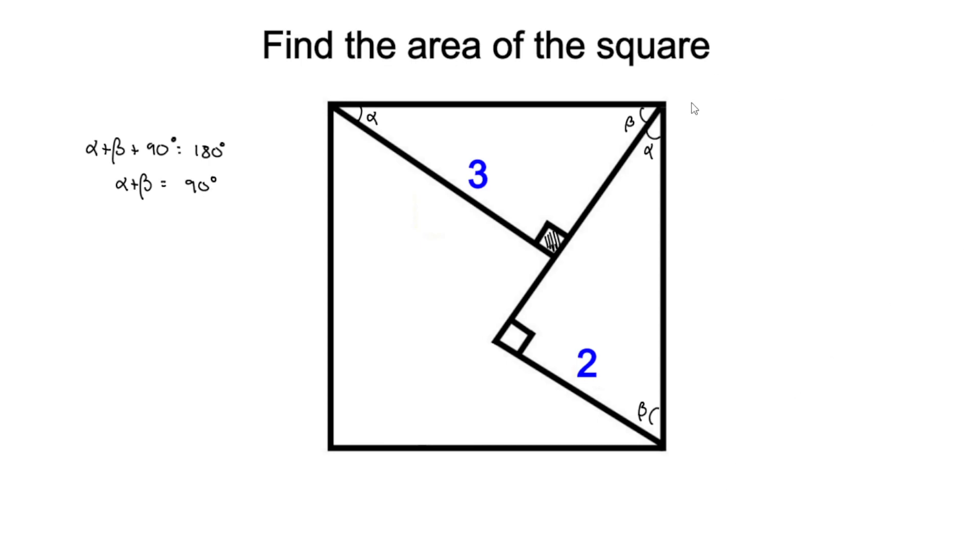But what do we have here on the upper right hand corner of our square? We have a right angle. Since this angle here is beta, we can ascertain that this angle right here would be alpha.